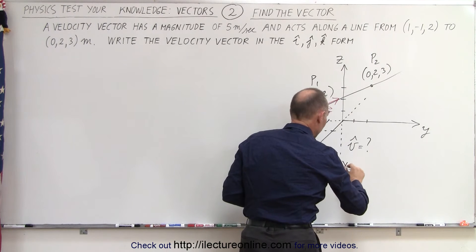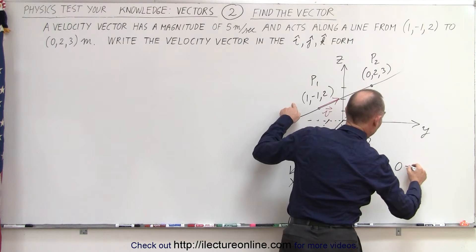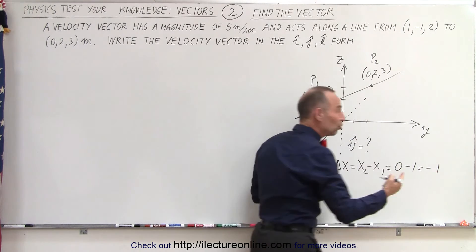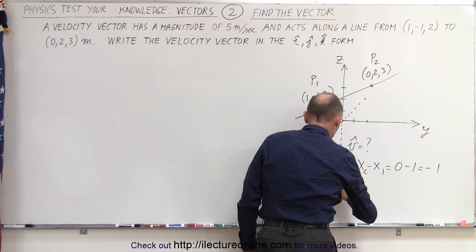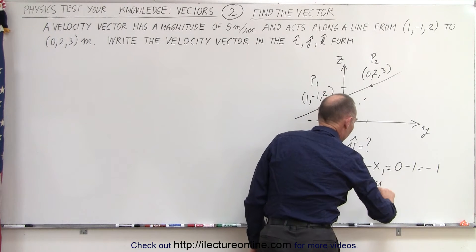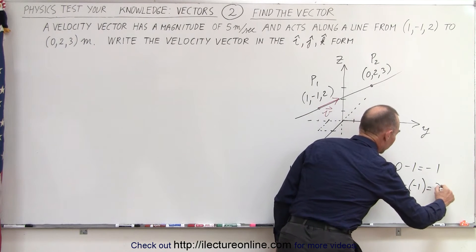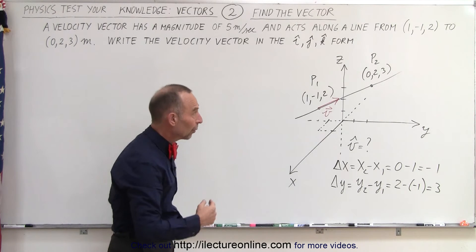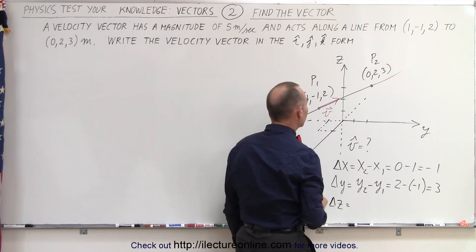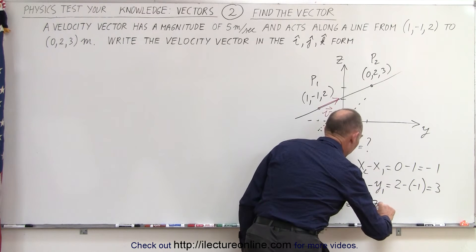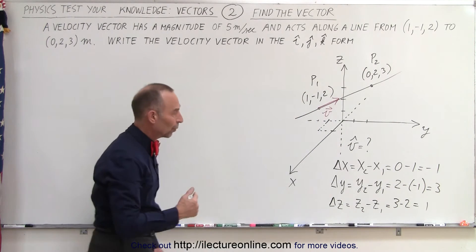So delta x is equal to x2 minus x1, which is equal to zero minus one, which is negative one. The change in the y direction, y2 minus y1, would be equal to two minus negative one, which is positive three. The change in the z direction is equal to z2 minus z1, which is equal to three minus two, which is one. So those are all the changes in the x, y, and z direction.